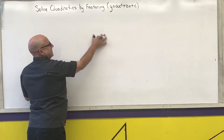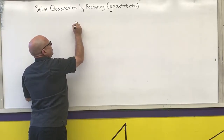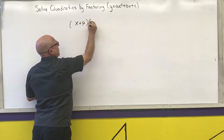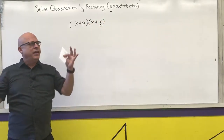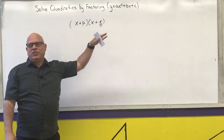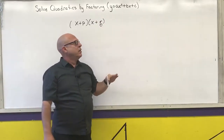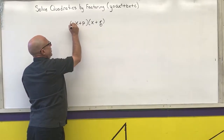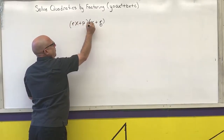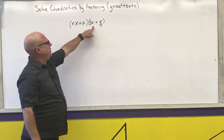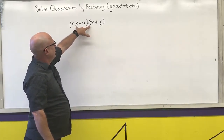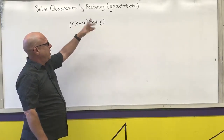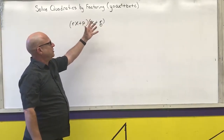In the last case we had x plus a number times x plus another number, and we ended up multiplying that together and figuring out that I needed two numbers that multiplied to the last term and added to the middle. Now we may have coefficients in front of these two things. So I am going to foil this out and see what pattern matches.